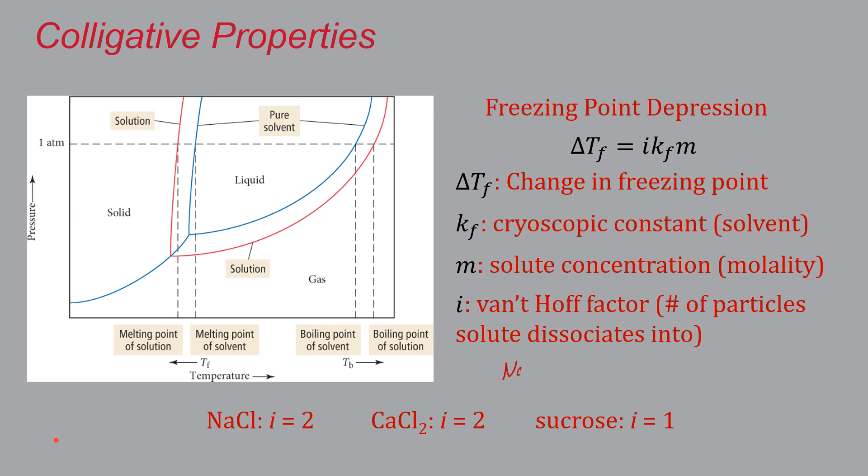for something like sodium chloride, when it dissociates, it forms an aqueous sodium cation and an aqueous chloride cation. So you have one thing here, but it breaks up into two. So its van't Hoff factor is two. Calcium chloride breaks up into three particles, a calcium ion and two chlorides. So its van't Hoff factor is not two, it is in fact three.